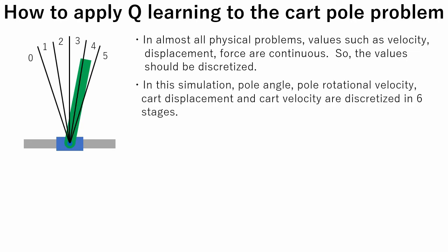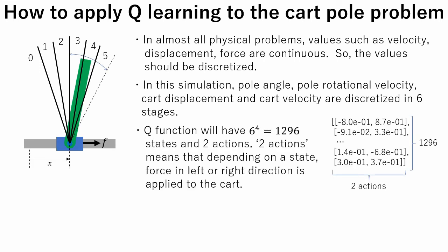In this simulation, pole-angle, pole-rotational velocity, cart-displacement and cart-velocity are discretized in six stages. Q function will have 6 to the fourth power which is 1296 states, and two actions. Two actions means that depending on a state, force in left or right direction is applied to the cart.